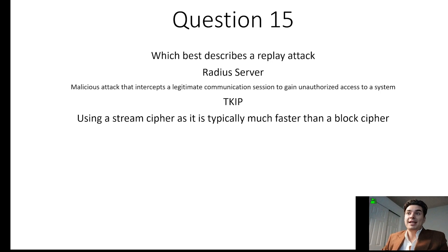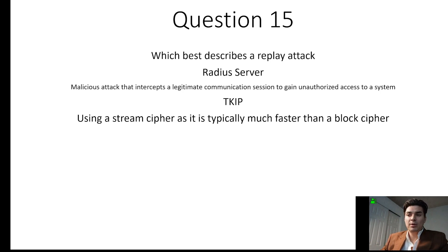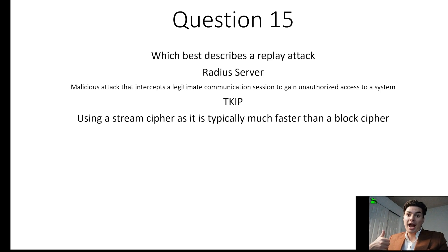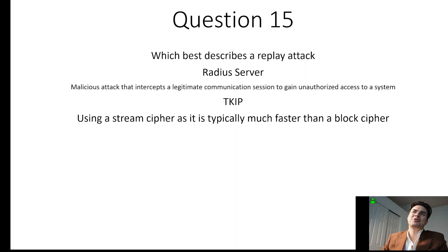A RADIUS server is used for authentication and authorization and manages user access to a network. Regarding stream ciphers versus block ciphers: stream ciphers are typically much faster and are used for live streaming, voice over IP, and anything happening in real time. Block ciphers are typically used for larger blocks — data at rest, file encryption, and data communication.